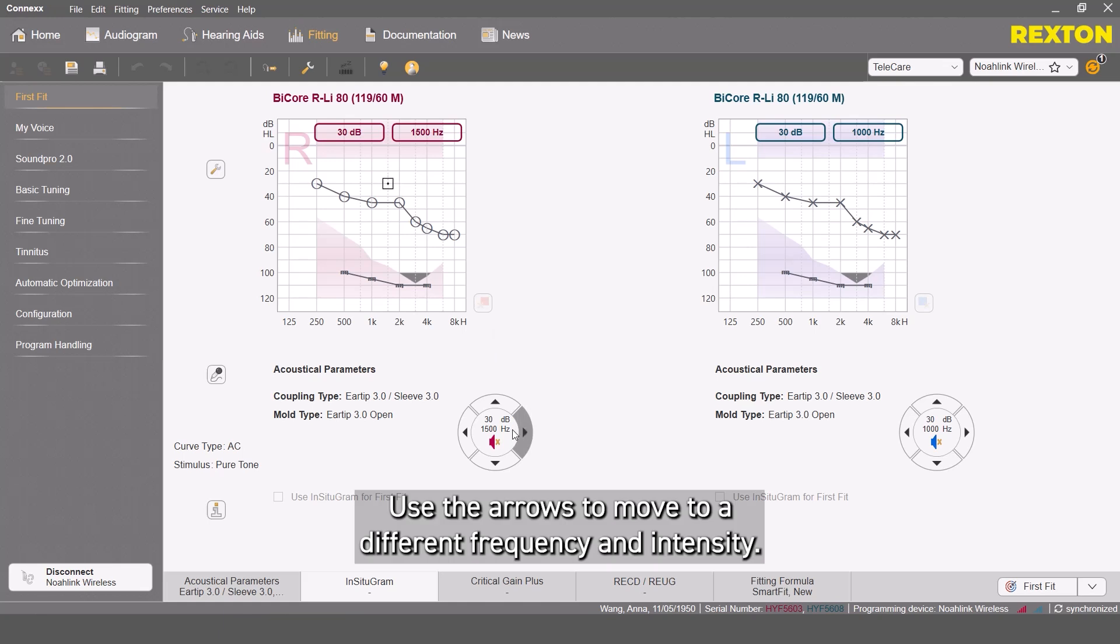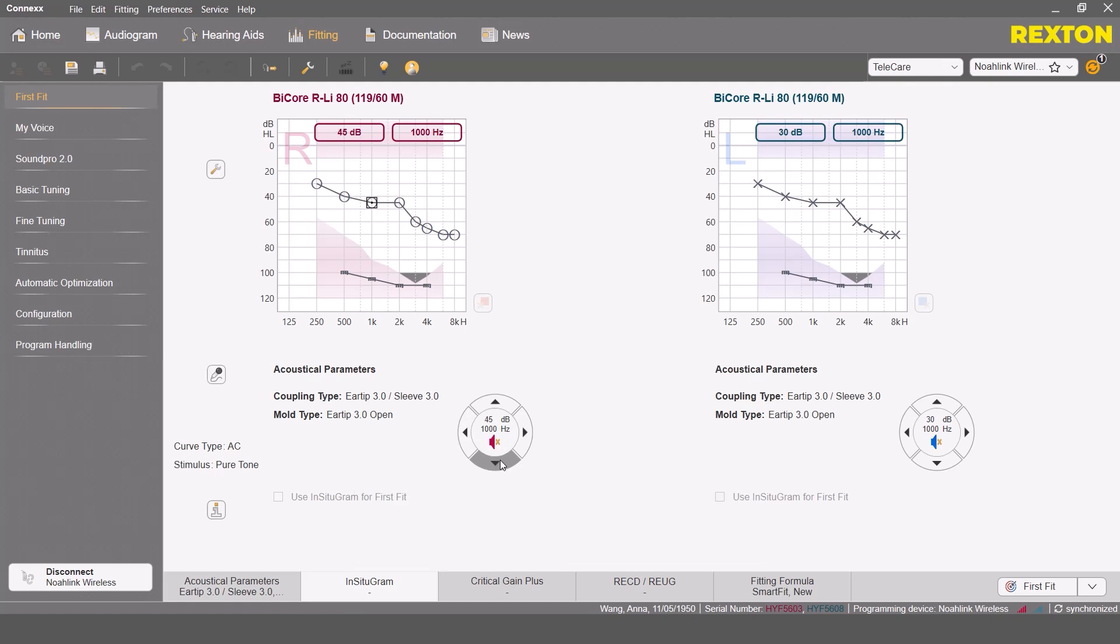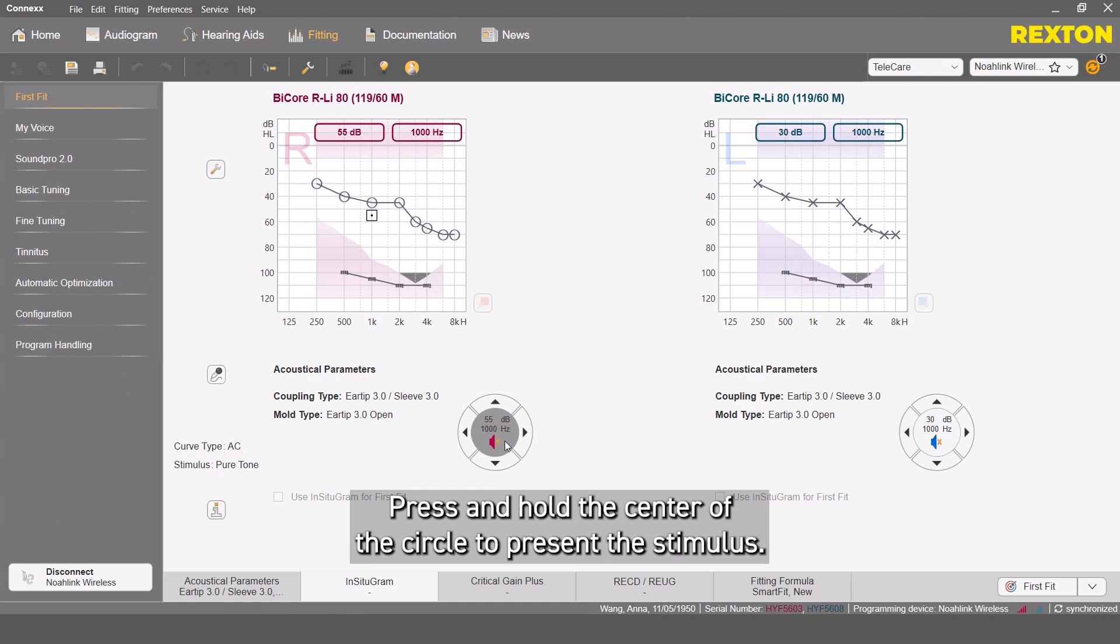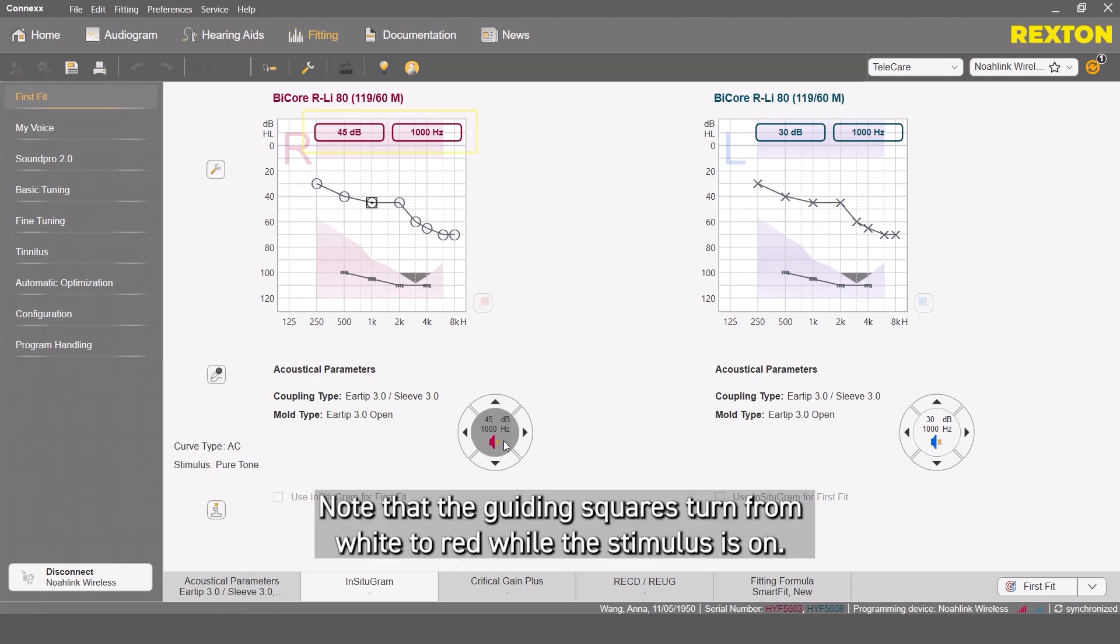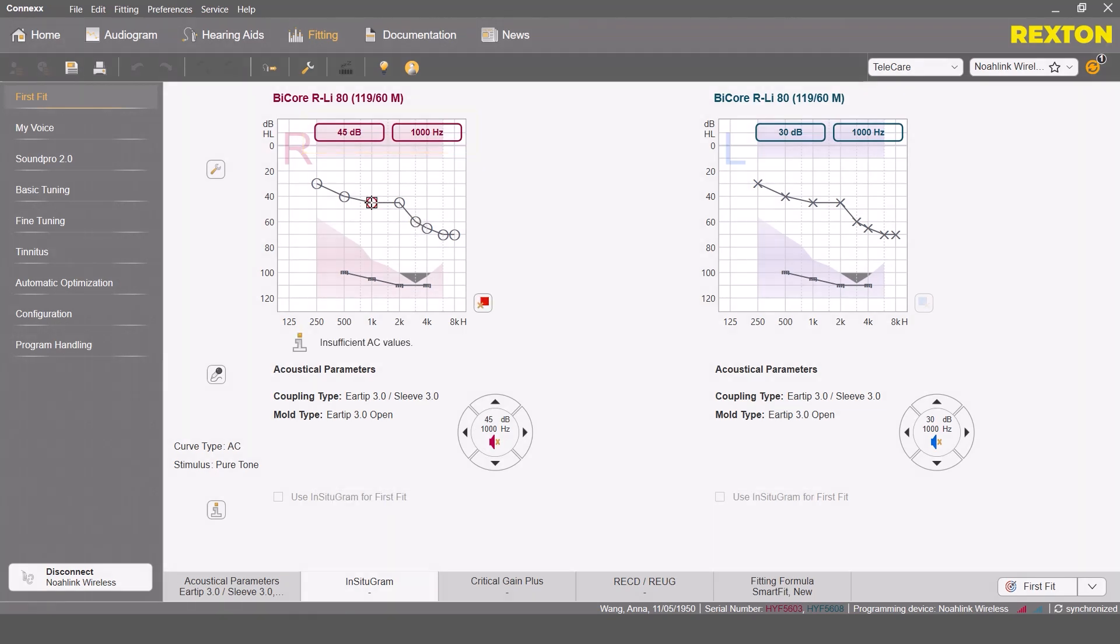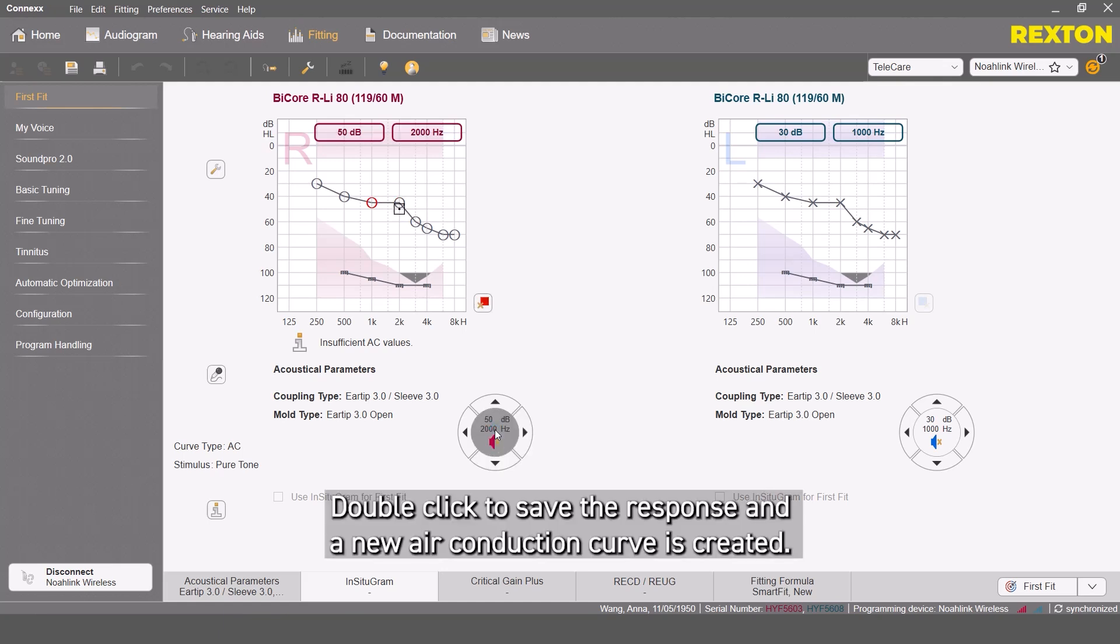Use the arrows to move to a different frequency and intensity. Press and hold the center of the circle to present the stimulus. Note that the guiding square turns from white to red while the stimulus is on. Double-click to save the response, and a new air conduction curve is created.